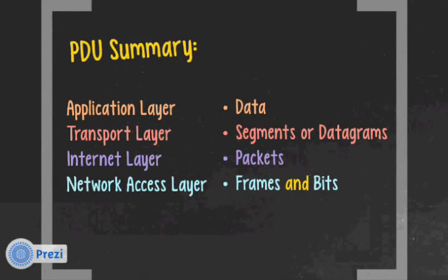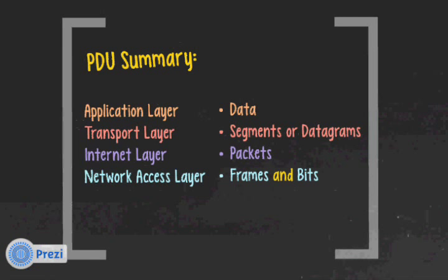PDU summary: the application layer has data. The transport layer has segments, used for TCP, or datagrams, used for User Datagram Protocol. The internet layer has packets. The network access layer has frames for the data link layer and bits for the physical layer.